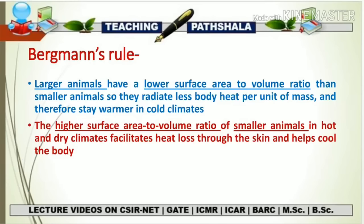To summarize Bergmann's Rule: larger animals have a lower surface area to volume ratio than smaller animals, so they radiate less body heat per unit of mass and stay warmer in cold climates. Smaller animals have a higher surface area to volume ratio in hot and dry climates, which facilitates heat loss through the skin and helps cool down the body. Bergmann's Rule is about size, volume, and surface area to volume ratio — these factors determine which animals are found in colder versus warmer climates.